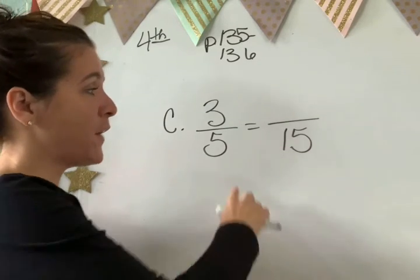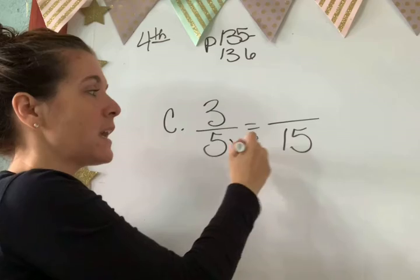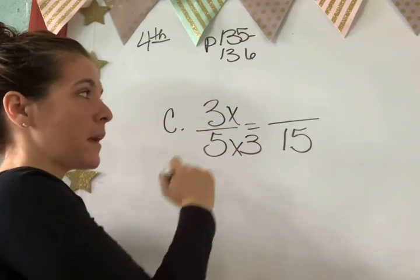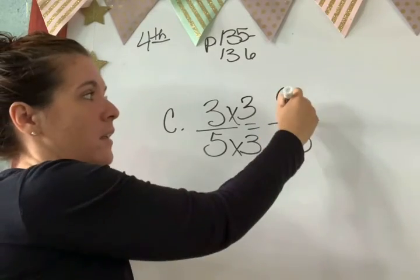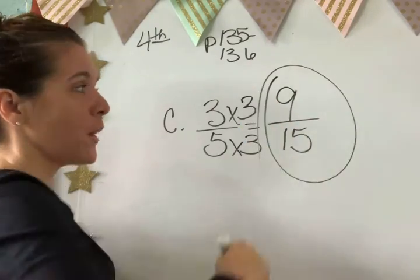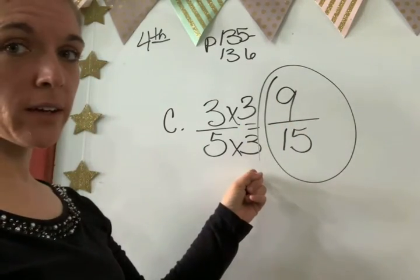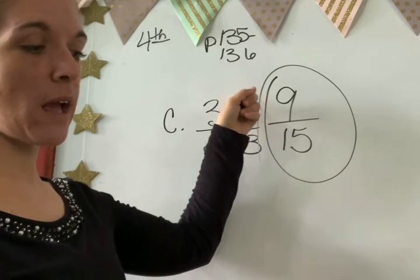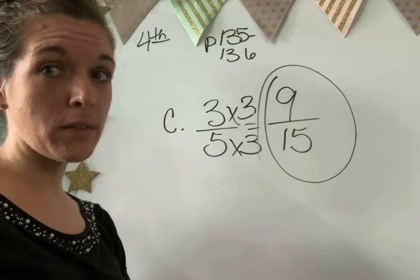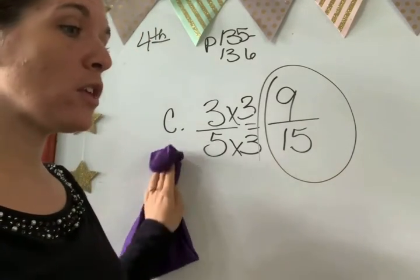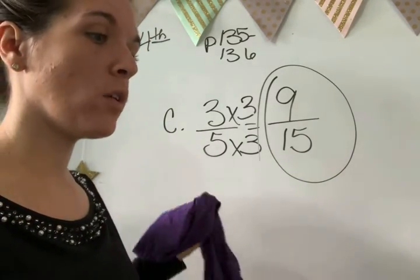Okay, Keanu. 5 times what equals 15? 3. Good. So what do we multiply up here? 3. Good. So what's your answer? 9. Okay. All you have to remember is whatever you multiply down here, you have to multiply up here as well. Okay. I'm going to let you do letter D and letter E by yourself. And I want to check it when you send it to me so I know that you understand.